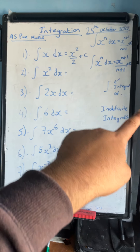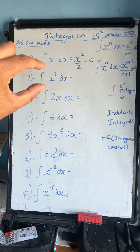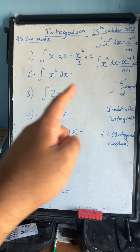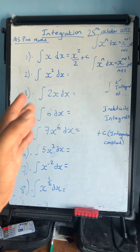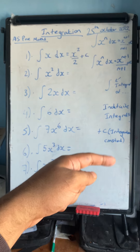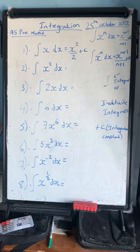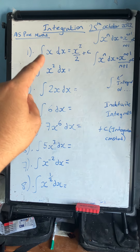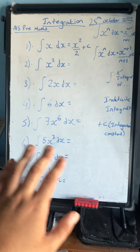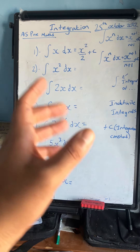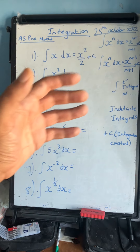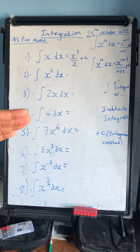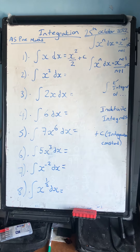These integrals are called indefinite integrals because they have no limits, so I get a generic answer. This leads to an important point: when I integrate any function I must add a plus c at the end — the constant of integration. The constant of integration is only for indefinite integrals. For definite integrals there's no need for plus c.